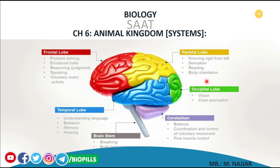Every single lobe has centers that control your body. For example, the frontal lobe controls problem solving, emotional traits, reasoning, judgment, speaking, and voluntary activities.